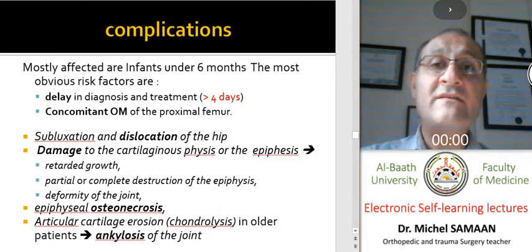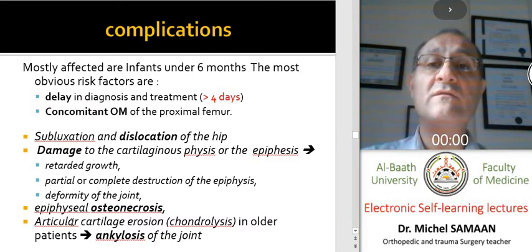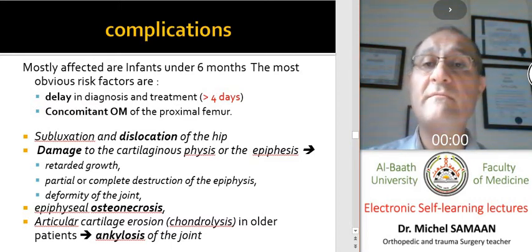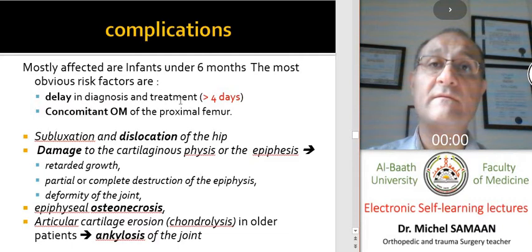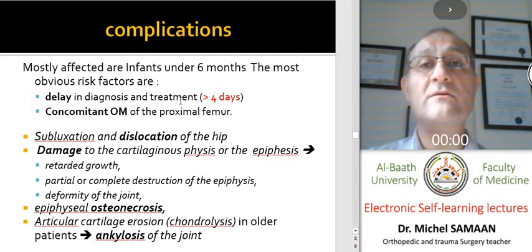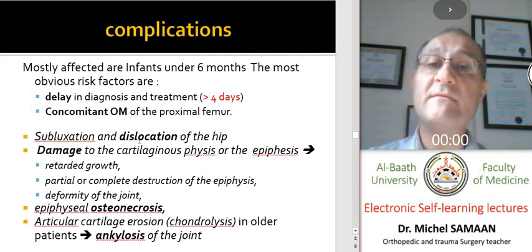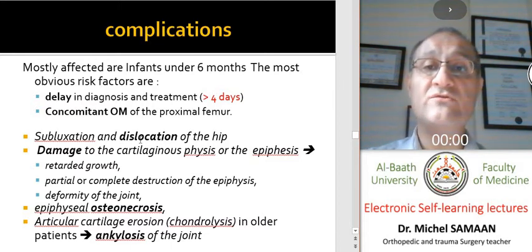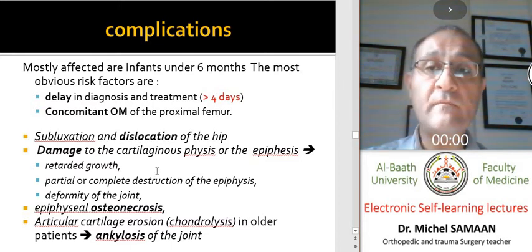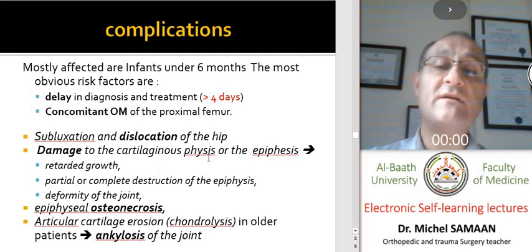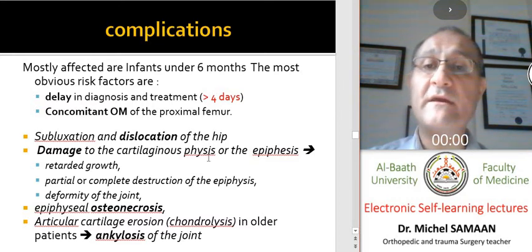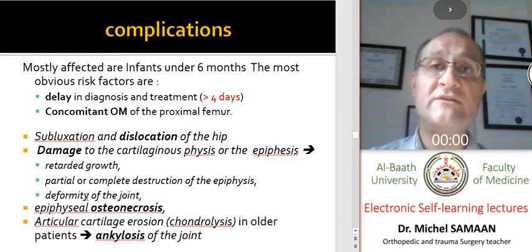With delayed treatment, if the infection is not treated, it may cause concomitant osteomyelitis and affect joint viability. It may cause subluxation or dislocation of the joint, especially the hip. If the epiphyses and cartilaginous plates are affected, this may cause retarded growth and destruction of the epiphyses with deformity of the joint.